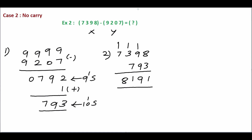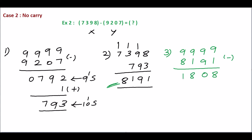In step 2, we don't have any carry. So take the 10's complement for the sum. First, find the 9's complement. 9 minus 1 is 8. 9 minus 9 is 0. 9 minus 1 is 8. 9 minus 8 is 1. This is the 9's complement. Add 1 with this to get the 10's complement. 8 plus 1 is 9. 0, 8, 1. This is the 10's complement.